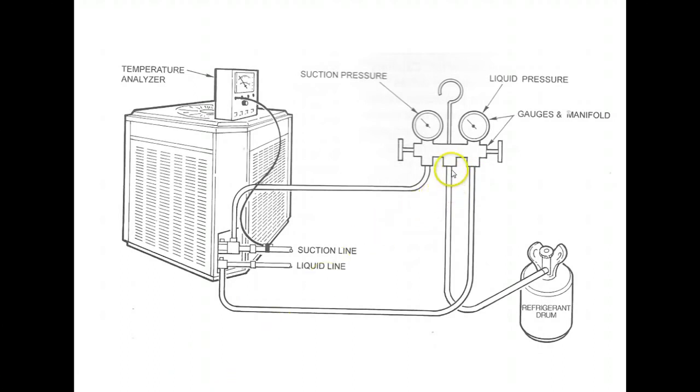And then you'll do that for the third time over here on the yellow hose once you have your refrigerant drum hooked up and your valve on the drum open so that you have some refrigerant pressure here. Loosen up your hose and allow some refrigerant to purge out and tighten it up. And now you've purged the air out of all three of your refrigeration lines.